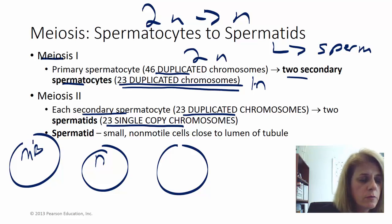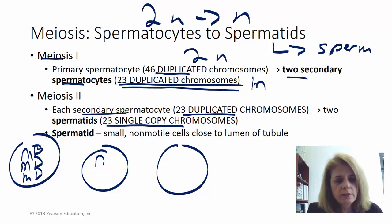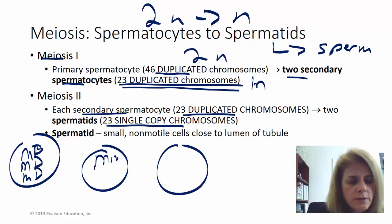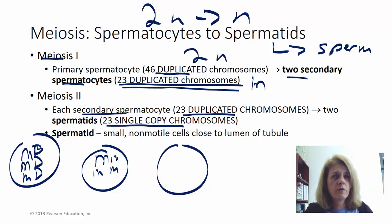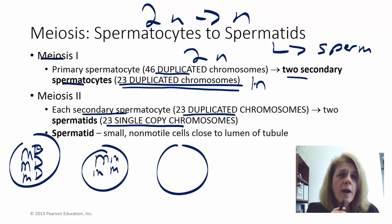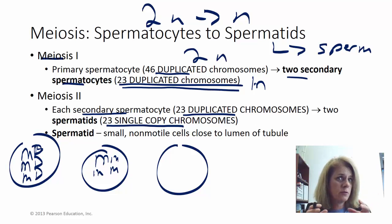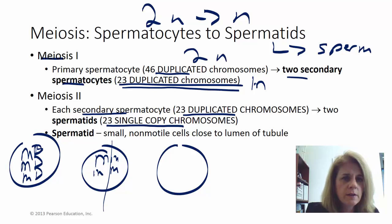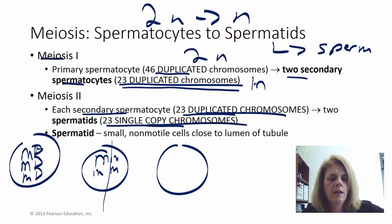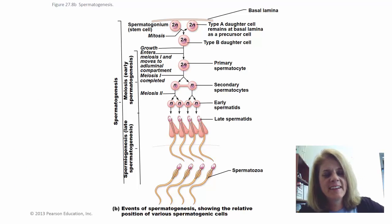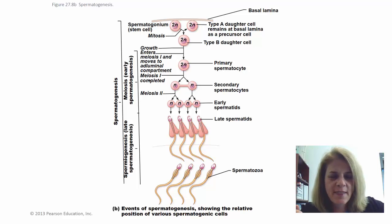These secondary spermatocytes are 1n because you don't have one from mom and one from dad — you might have two copies of the same chromosome. In meiosis II, those secondary spermatocytes with 23 duplicated chromosomes divide again, giving you 23 single copies of each chromosome. You wind up with four cells that are fully 1n with single copies — these are the early spermatids.